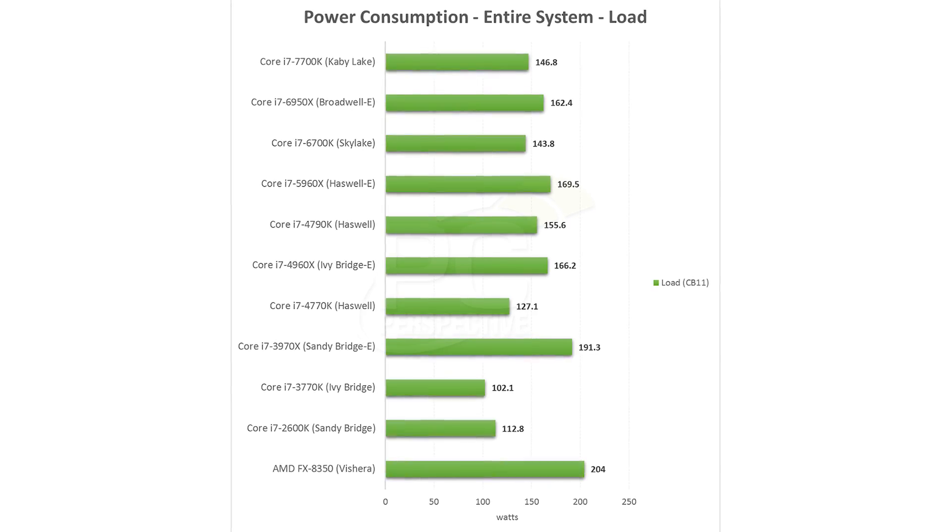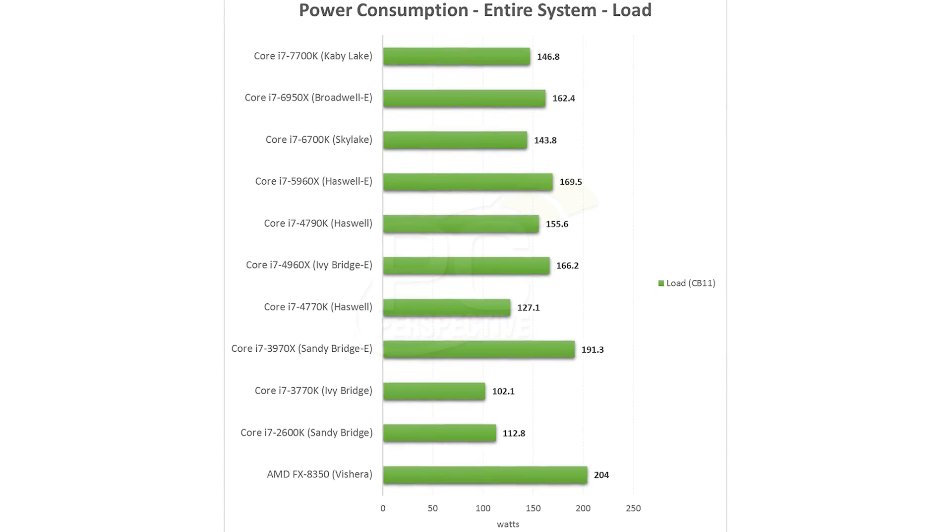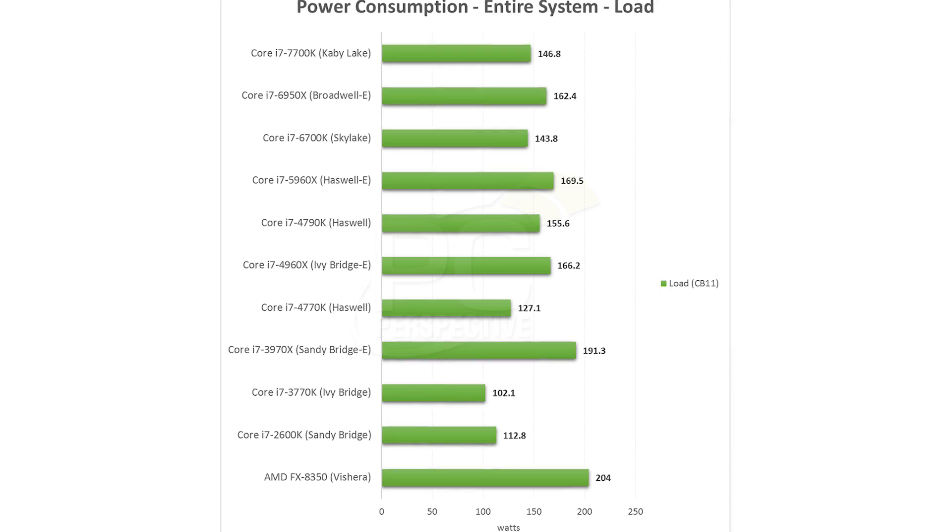Power consumption is essentially the same — no changes. Performance per dollar is essentially the same, maybe a couple percent better, since the 6700K and 7700K are the same price.